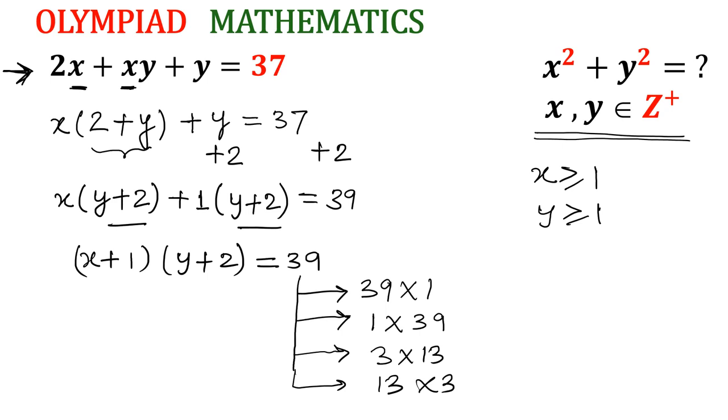Let us start the first two cases. If I am taking 39 and 1, means (x plus 1) equals 39 and (y plus 2) equals 1. So if y plus 2 equals 1, that means y will be negative 1, which is unacceptable because y is a positive integer. So first case is cancelled.